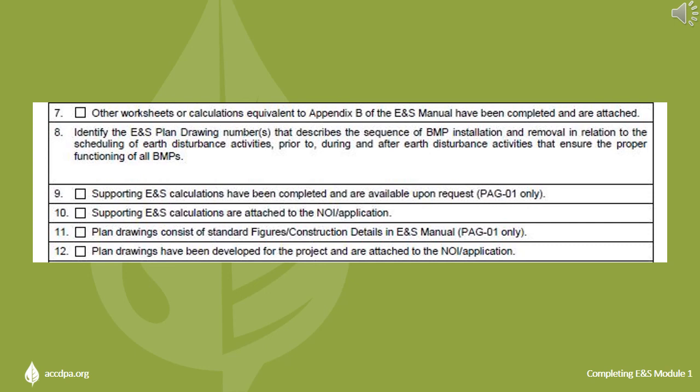Item 8 asks that you provide the ENS plan drawing number where the construction sequence can be found. Unlike PCSM Module 2 that asks for the entire sequence, the sequence itself should not be entered in the space — just the drawing sheet number or numbers where the sequence is located. Items 9 and 11 are for future PAG01 submissions only and should be left blank for a PAG02 submission.